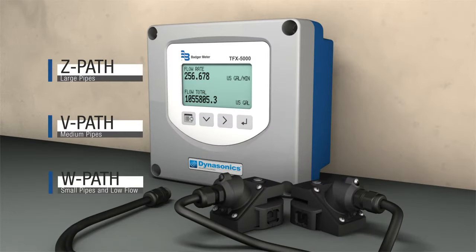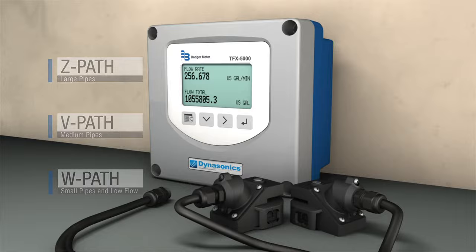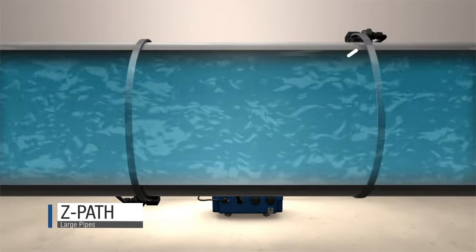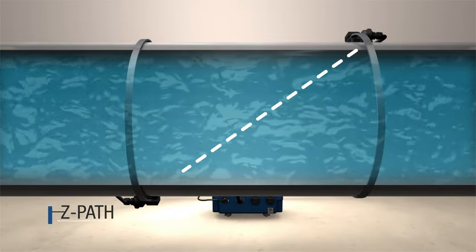Clamp on transducers can be positioned in multiple ways. A Z path or 1 traverse is typically used on large pipes. The signal is strongest when it travels this type of path.